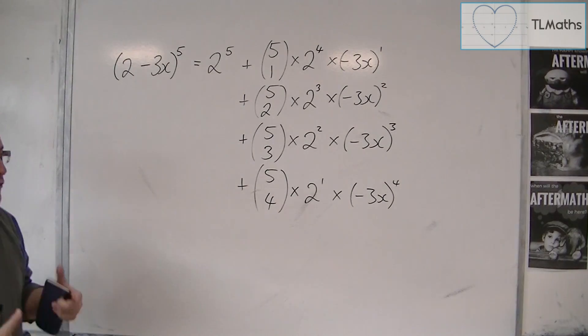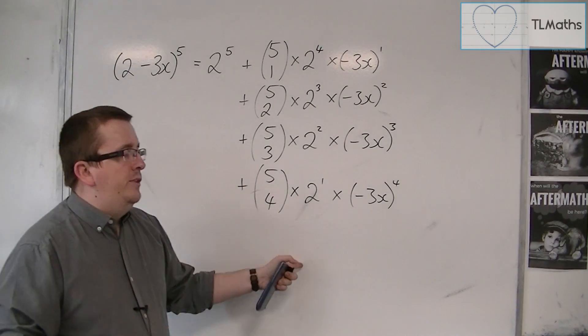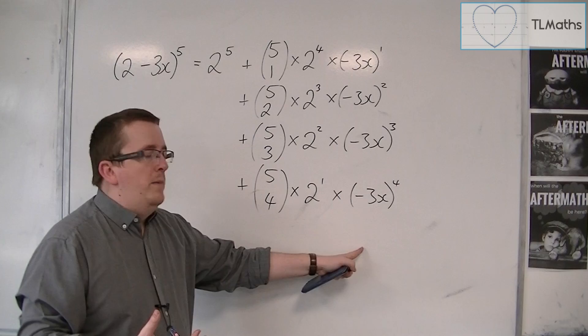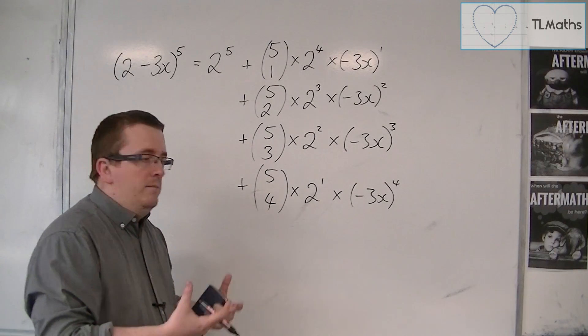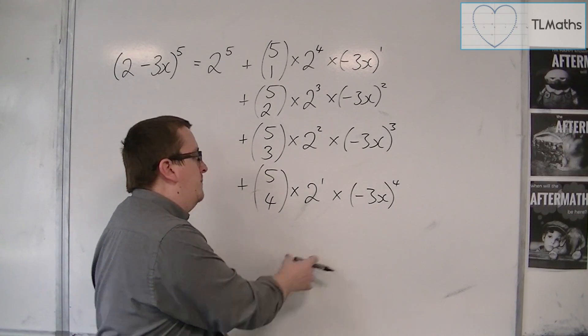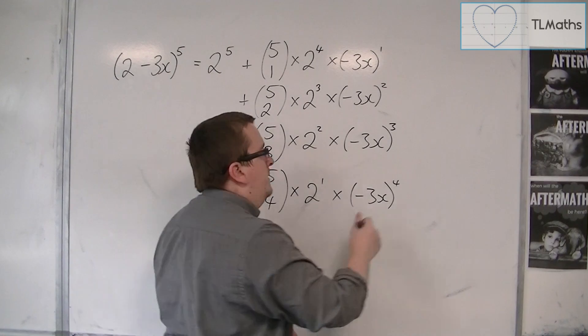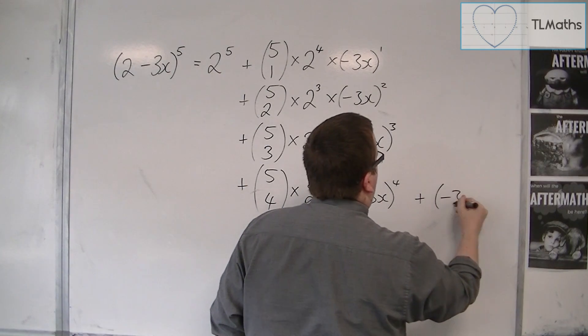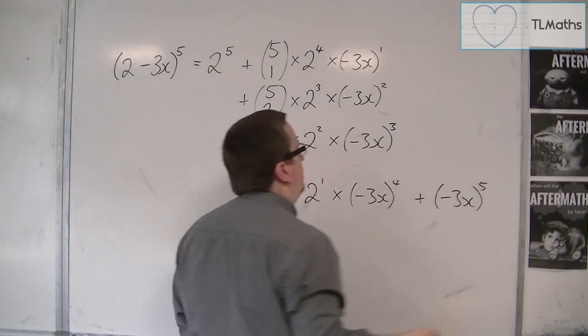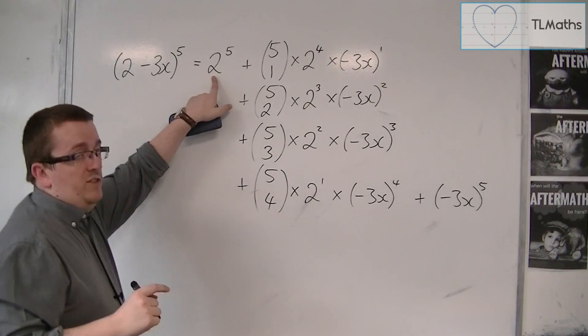And then you could have 5 choose 5 times 2 to the power of 0, but because 5 choose 5 is 1, 2 to the 0 is 1, we just have that minus 3x to the power of 5. It's exactly the same reason why we just have 2 to the 5 there.